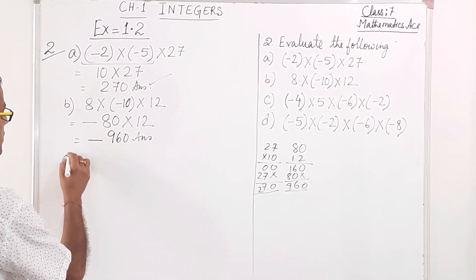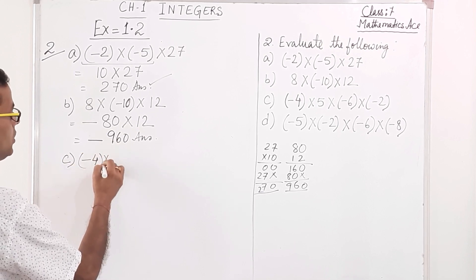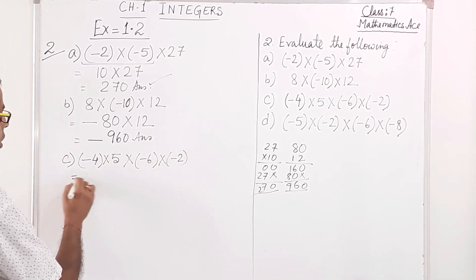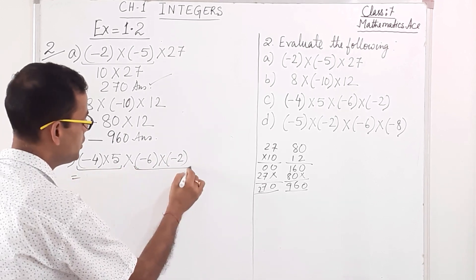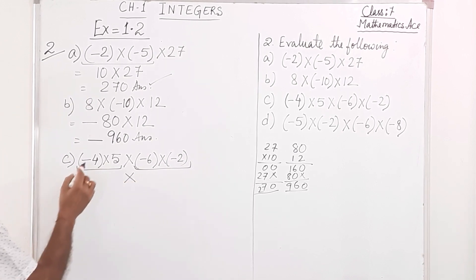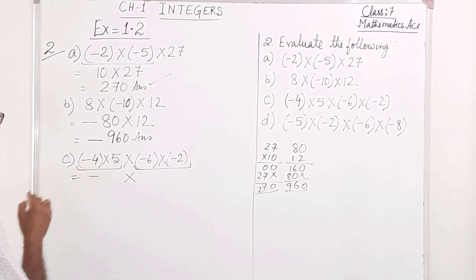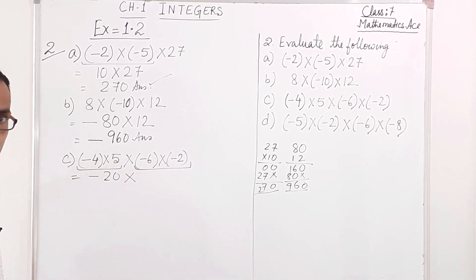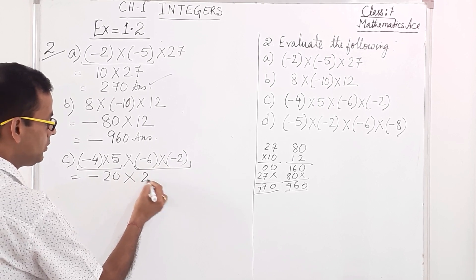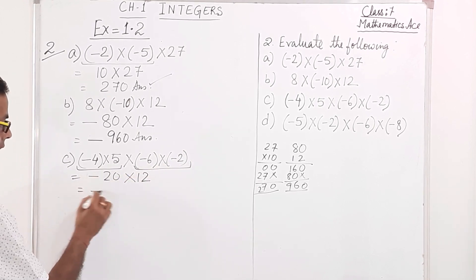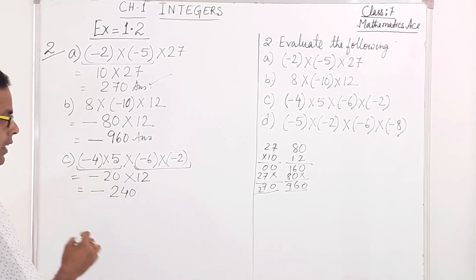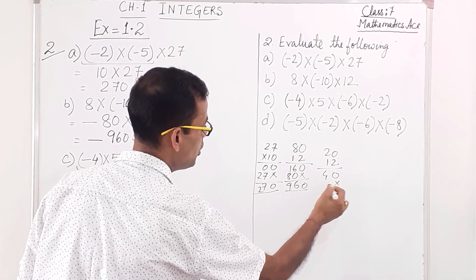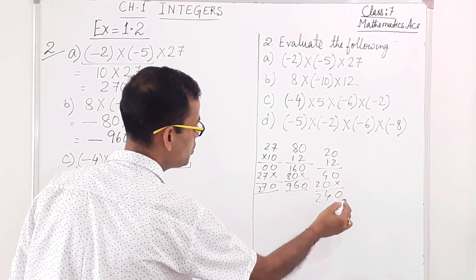Number C: minus 4 into 5 into minus 6 into minus 2. First, minus 4 into 5 — different sign — gives negative 20. Then minus 6 into minus 2 — same sign — gives positive 12. Finally, negative 20 into positive 12 — different sign — gives negative 240. So the answer is minus 240.